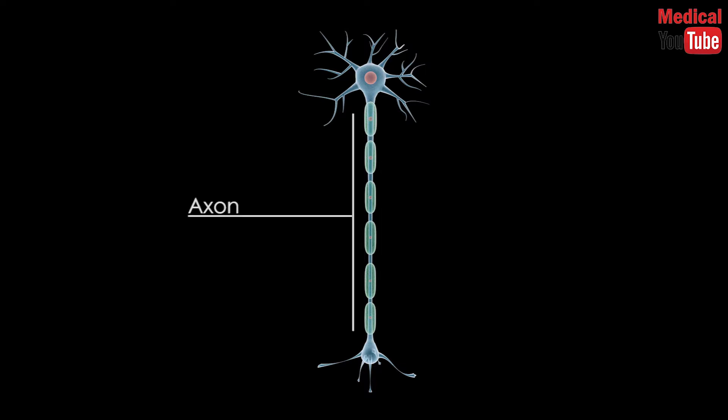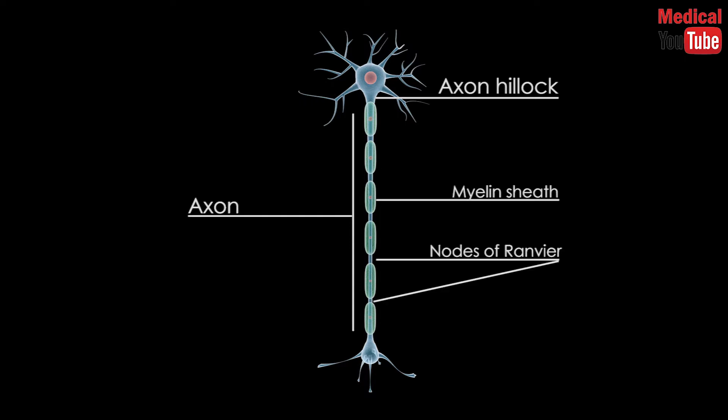An axon is a special cellular extension that arises from the cell body at a site called the axon hillock and travels a distance as far as one meter in humans, or even more in other species. It may contain a myelin sheath and nodes of Ranvier.